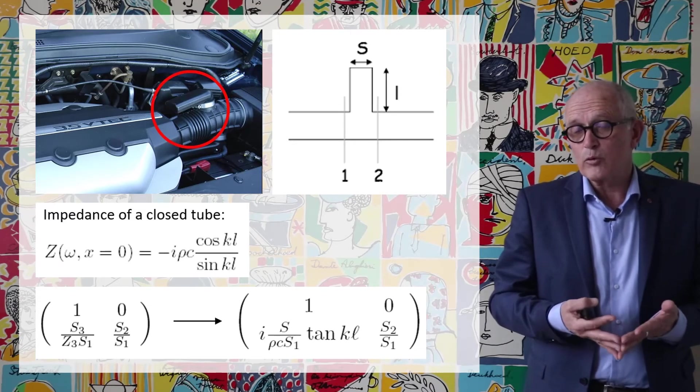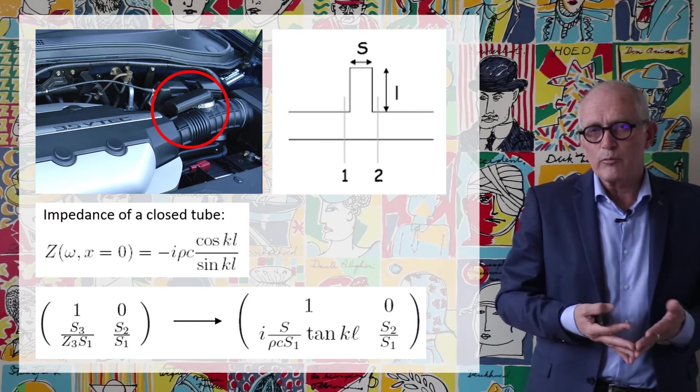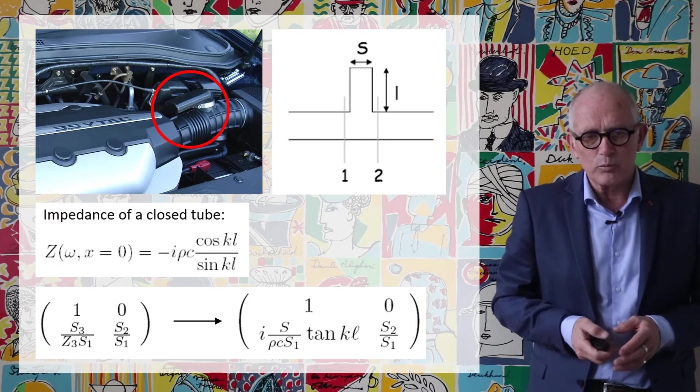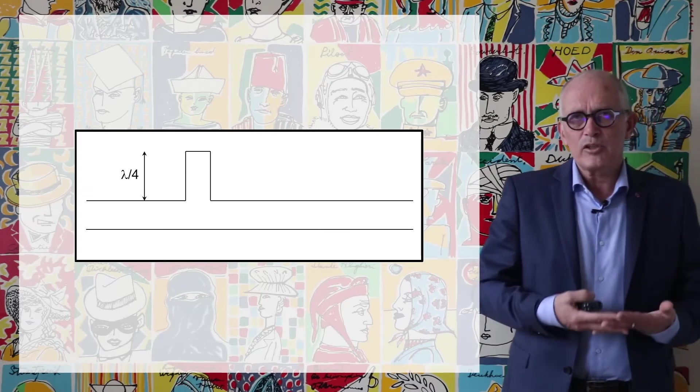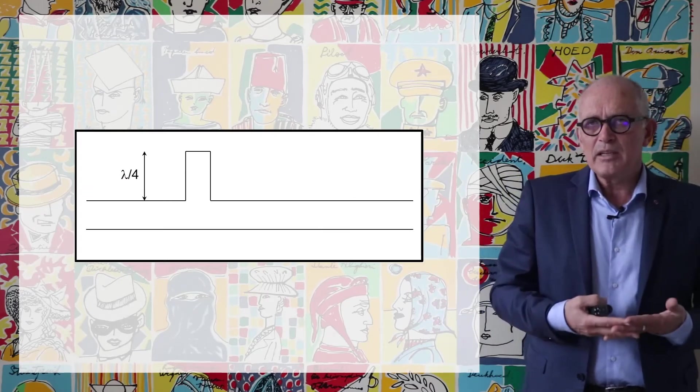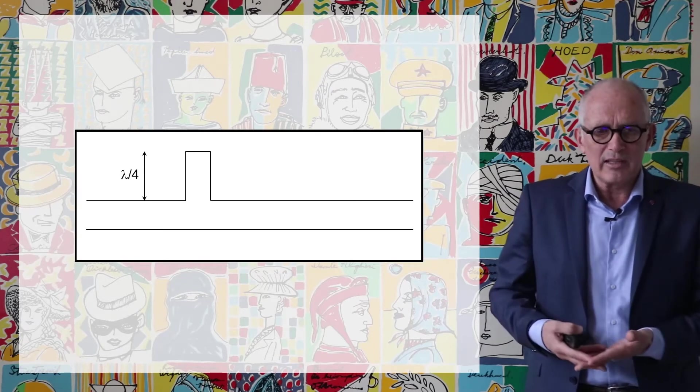And so you can see from there that there are some values of this which some frequency for which this is going to be zero and some frequencies for which it is going to be infinite. A quarter wavelength is a very efficient way of eliminating one well-defined frequency component in the signal.